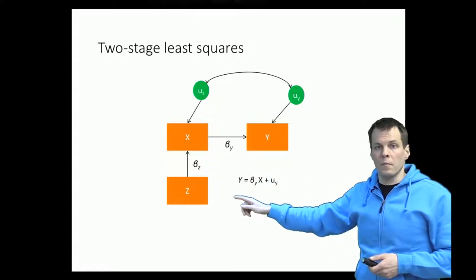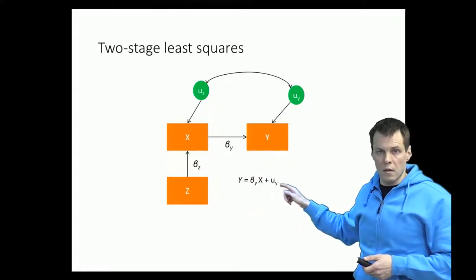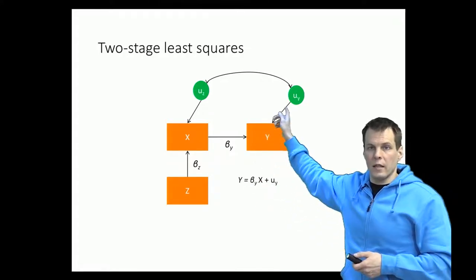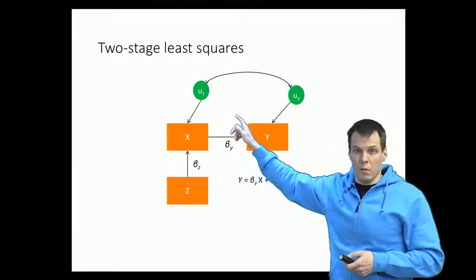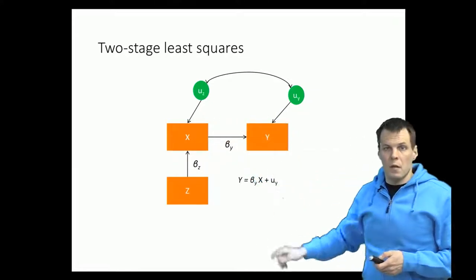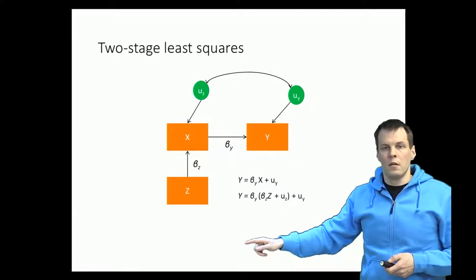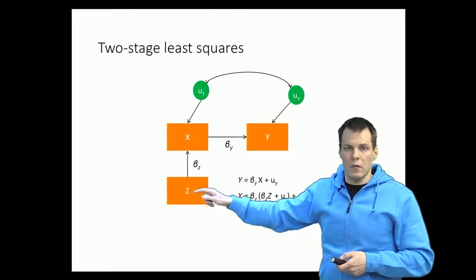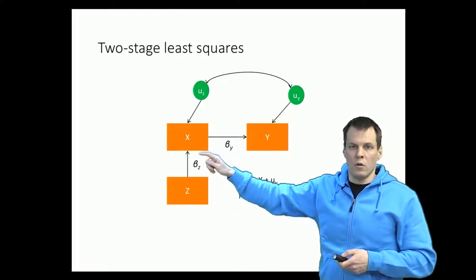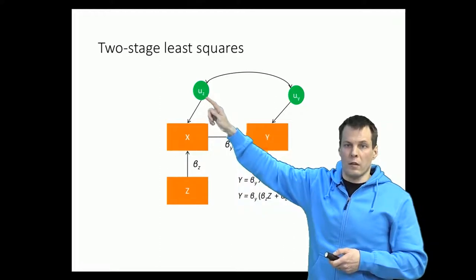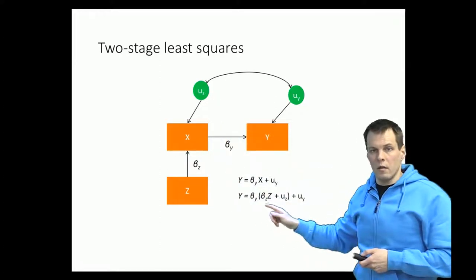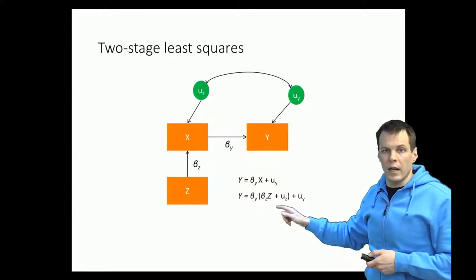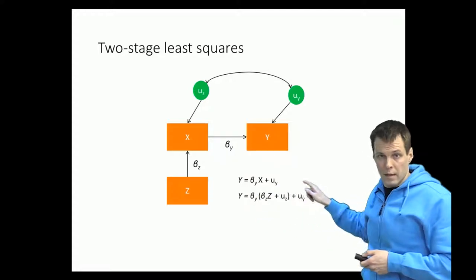So we have an endogenous regression: if we regress y on x, we have an endogeneity problem because some causes of x are correlated with some causes of y. With the instrumental variable z, we say that x is actually a sum of z multiplied by beta2 plus the error term from that regression. So we have the first regression of x on z, and the results feed into the second regression.